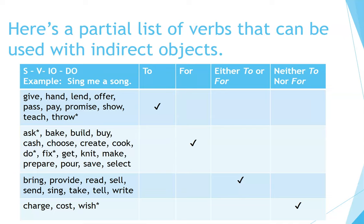Here is a partial list of verbs that can be used with indirect objects. Verbs that take 'to': give, hand, lend, offer, pass, pay, promise, show, teach, throw. Verbs that take 'for': ask, bake, build, buy, cash, choose, create, cook, do, fix, get, knit, make, prepare, pour, save, select. Verbs that can take either 'to' or 'for': bring, provide, read, sell, send, sing, take, tell, write. Verbs that take neither 'to' nor 'for': charge, cost, wish.